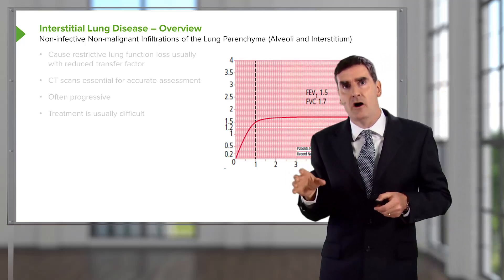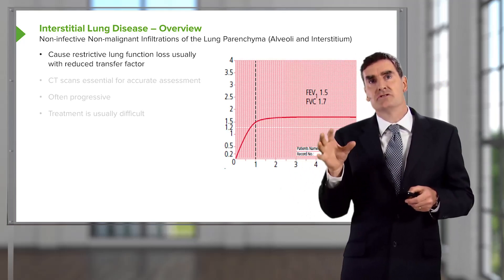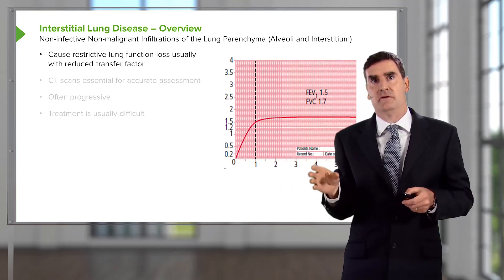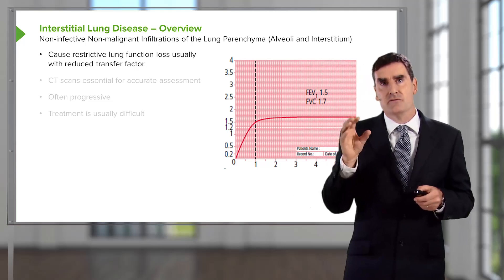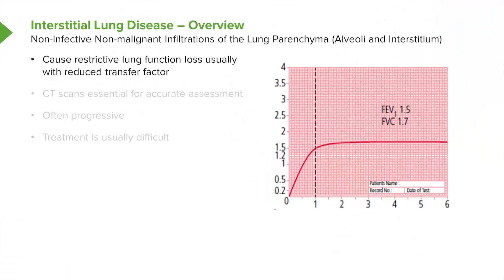In general, ILDs — interstitial lung diseases — cause a restrictive lung function pattern. That is, they reduce the FEV1 and the FVC. But as you can see on this diagram on the right-hand side, the ratio between the FEV1 and FVC is often increased, and total lung capacity is reduced as well. In general, CT scans are also essential for an accurate assessment of these types of diseases.